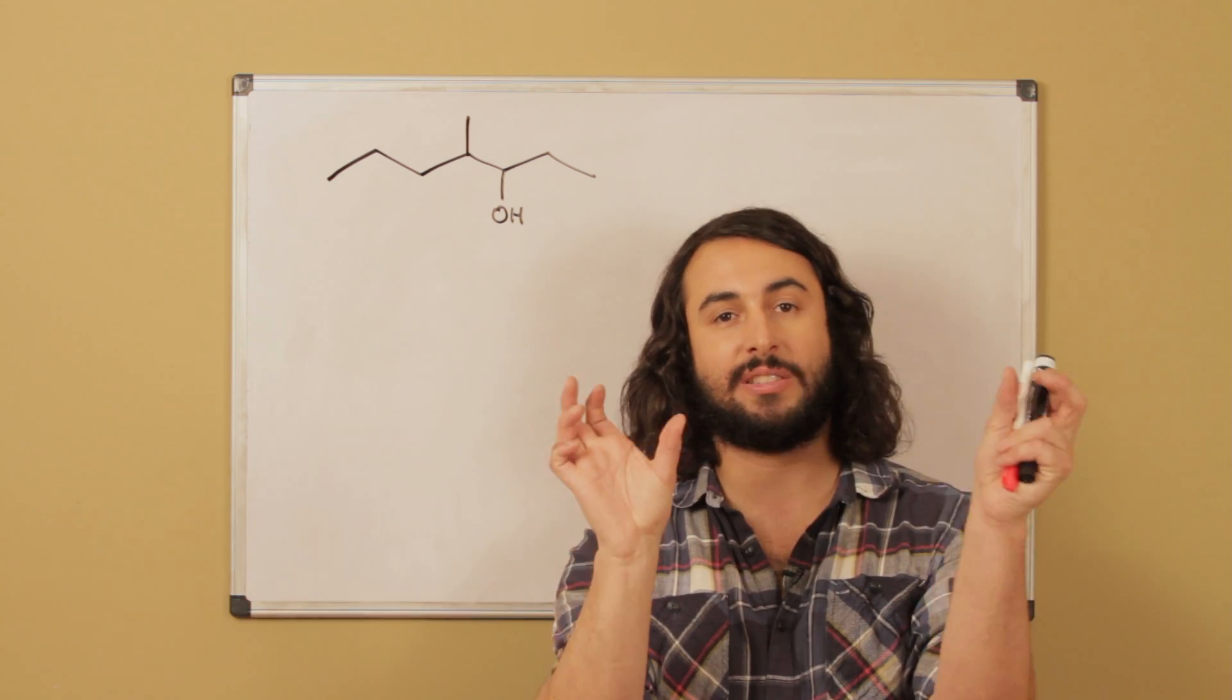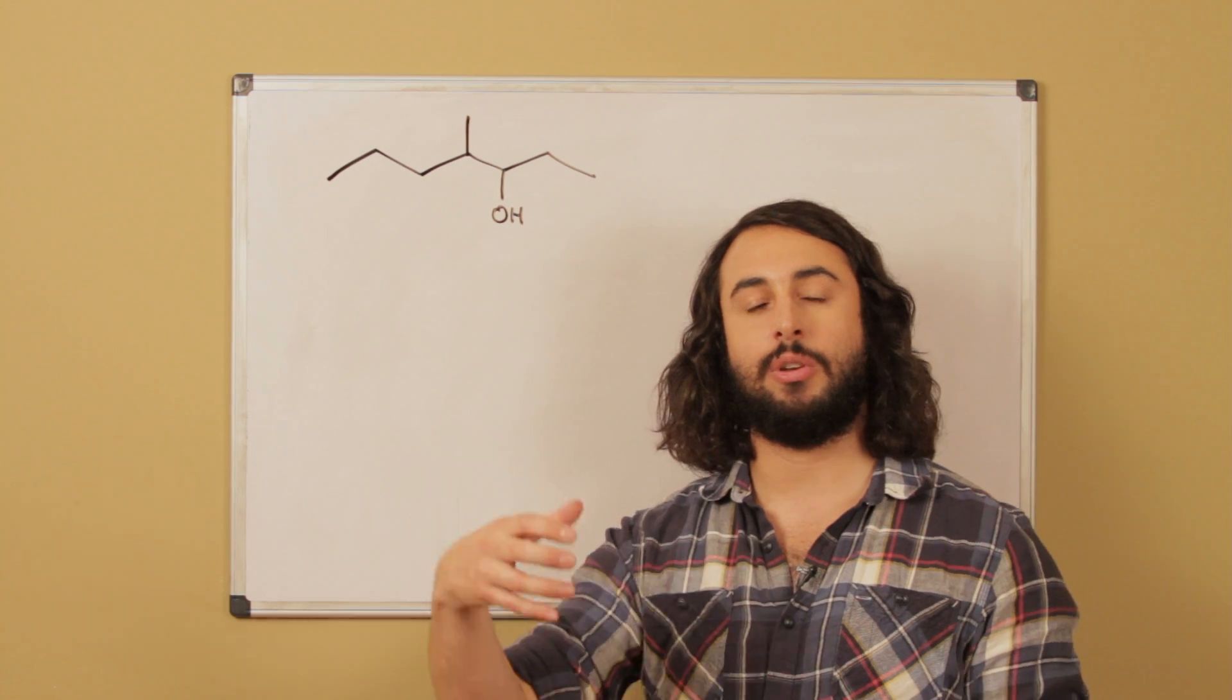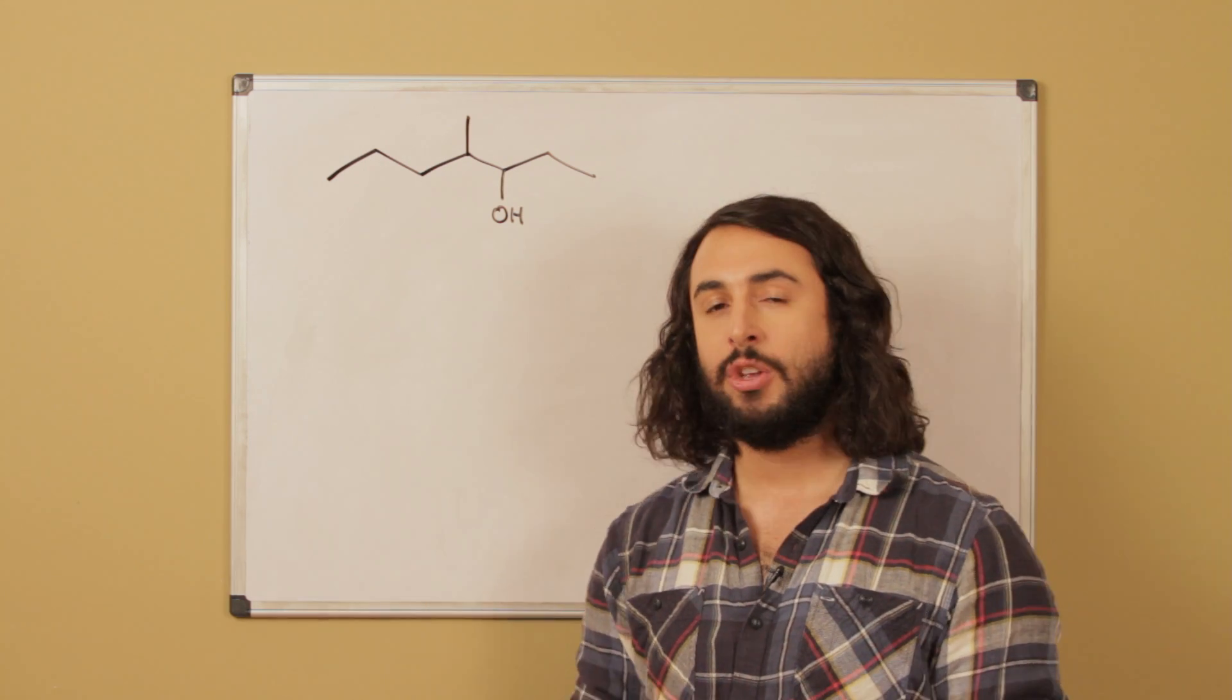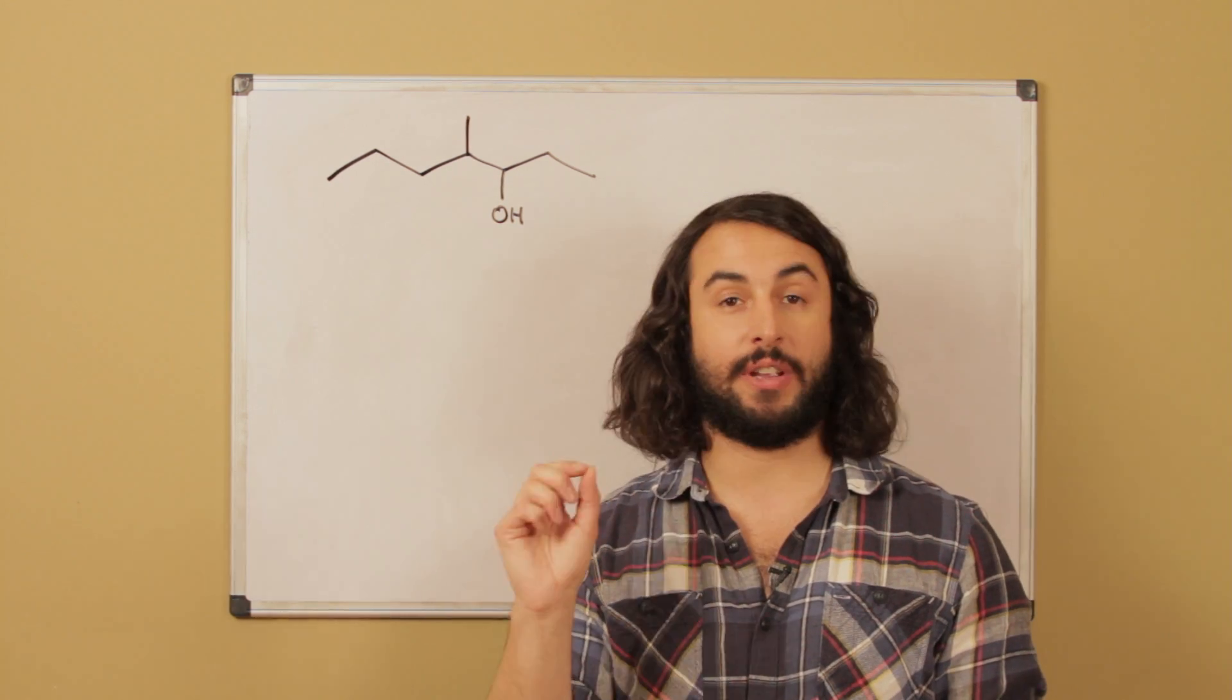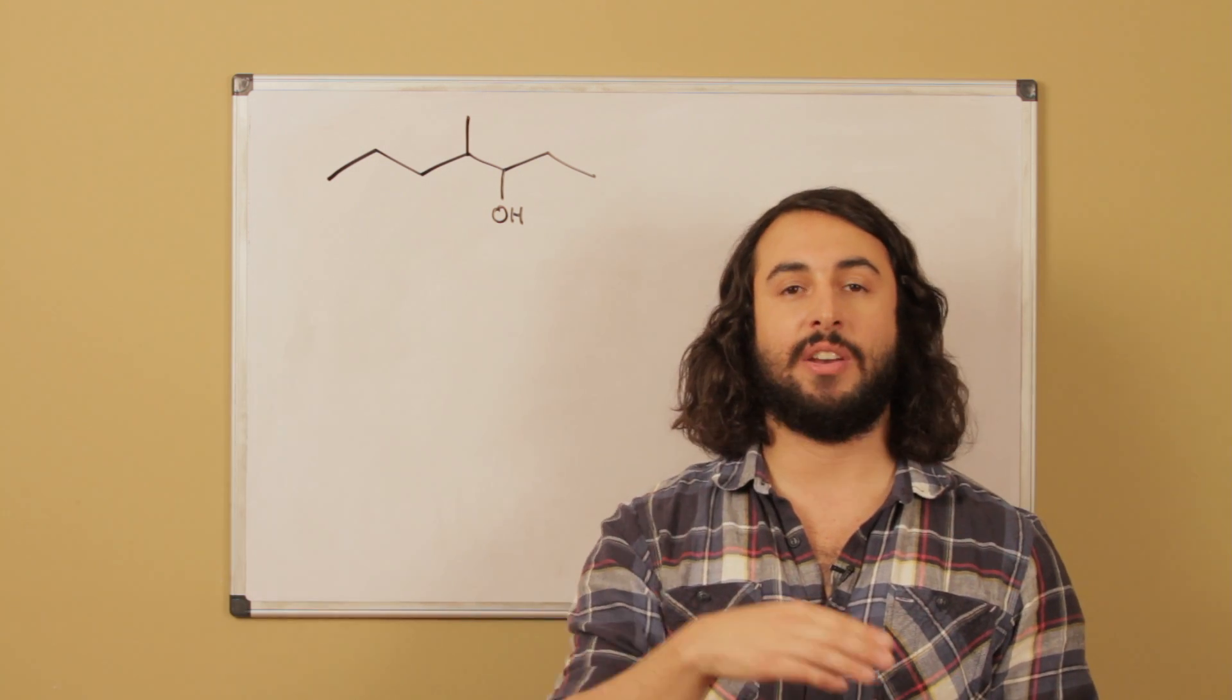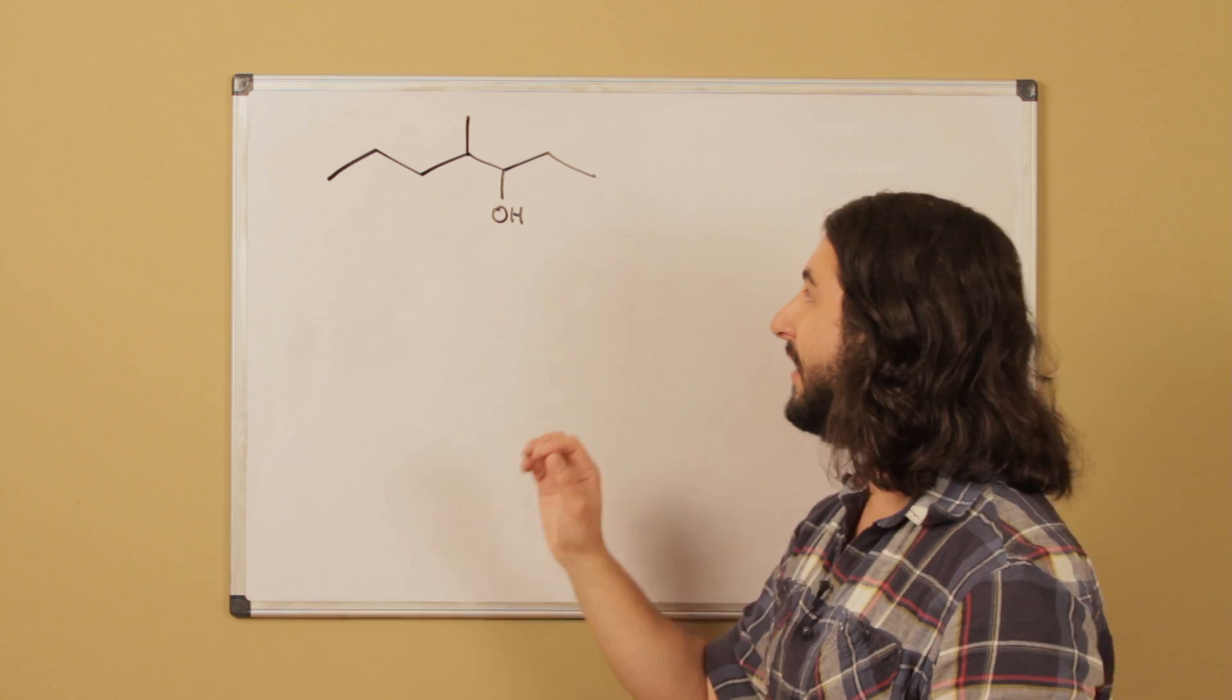When we think retrosynthetically, we're going to pull apart this molecule in ways that make sense because we will know reactions that will put them together in the way that we just pulled them apart. So when we do a grignard reaction, we know that the nucleophilic carbon, the carbon that is attached to magnesium, is always going to form a new sigma bond with a carbonyl carbon. And the carbonyl carbon, the carbonyl becomes an oxyanion which is protonated.